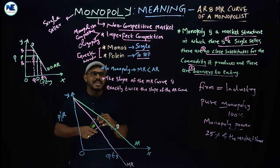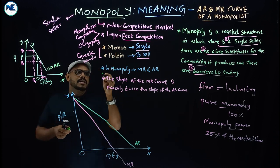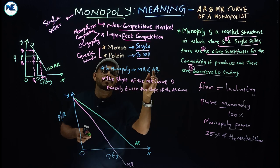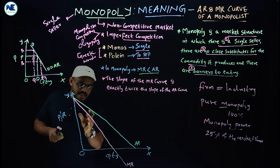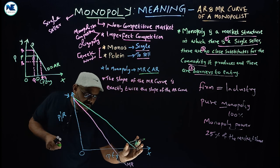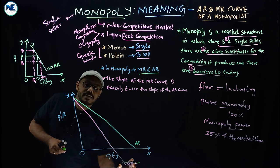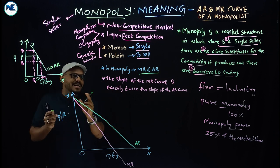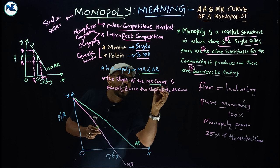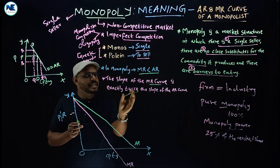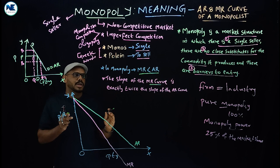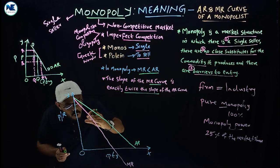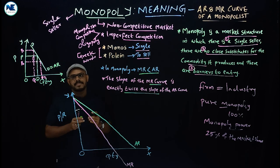In monopoly, the firm's marginal revenue is less than average revenue — this is very, very important. In this figure you can see that average revenue is greater than marginal revenue in all cases. Similarly, the slope of the marginal revenue curve is exactly twice the slope of the average revenue curve. This is also very important: the marginal revenue curve is steeper than the average revenue curve.